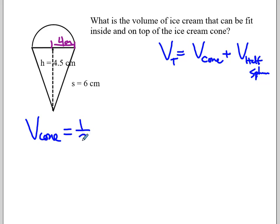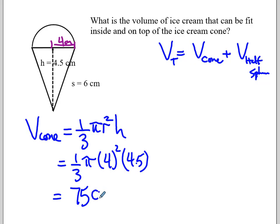It's 1/3 π r squared h. So 1/3 π, the radius we set is 4, the height of the cone is 4.5. And I'll find the volume of the cone. So we have 3.14 times 16 times 4.5 divided by 3. 75 cubic centimeters.